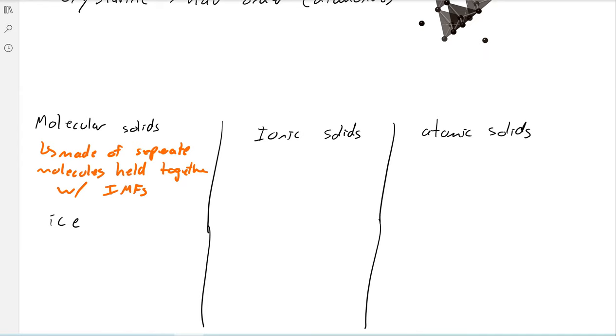An example is ice, which is water. We have separate water molecules, and they stay together due to intermolecular forces. As we learned, intermolecular forces are significantly weaker than bonds, so molecular solids generally have low melting points or boiling points. Ice has a relatively high melting point because the intermolecular forces are very strong—hydrogen bonds.